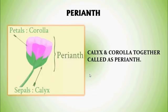Perianth — Calyx and Corolla together are called Perianth. Another concept will be discussed in the next part. Thank you.